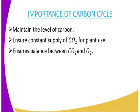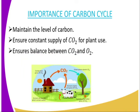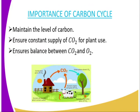What is the importance of the carbon cycle? Number one, it maintains the level of carbon. Number two, it ensures there is a constant supply of carbon dioxide for plant use — as you know, carbon dioxide is a raw material for photosynthesis. Number three, it ensures a balance between carbon dioxide and oxygen in the atmosphere.